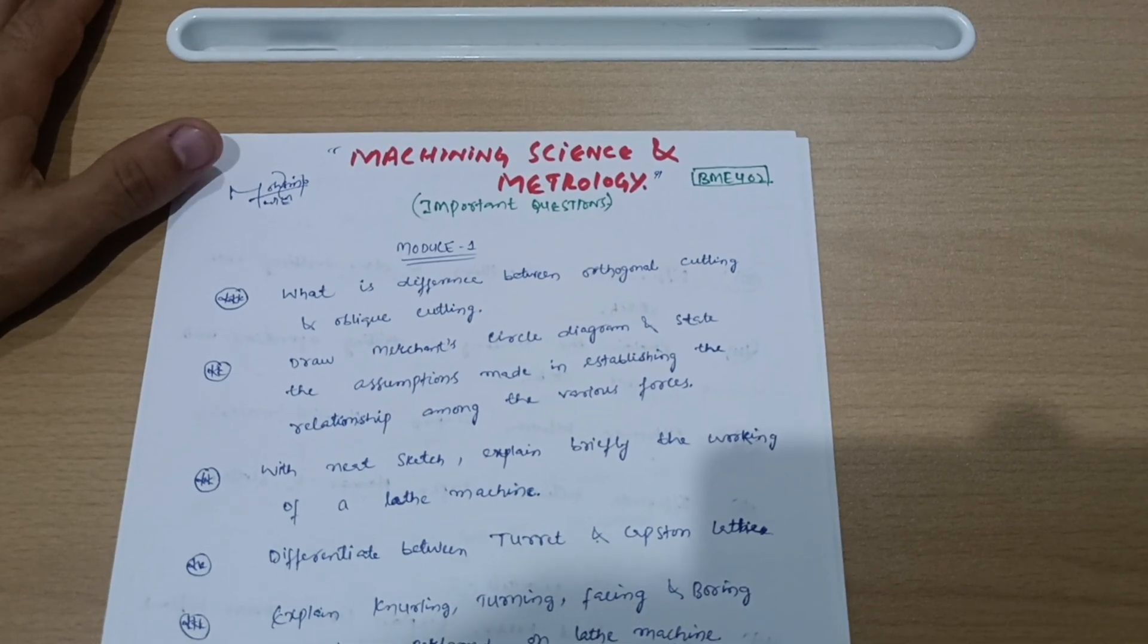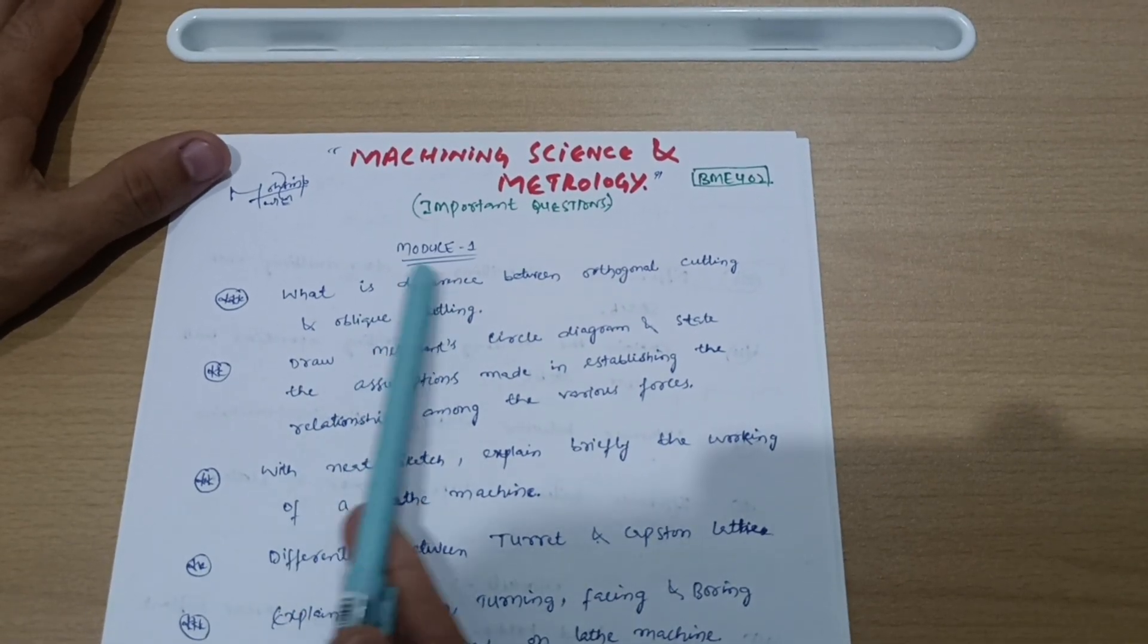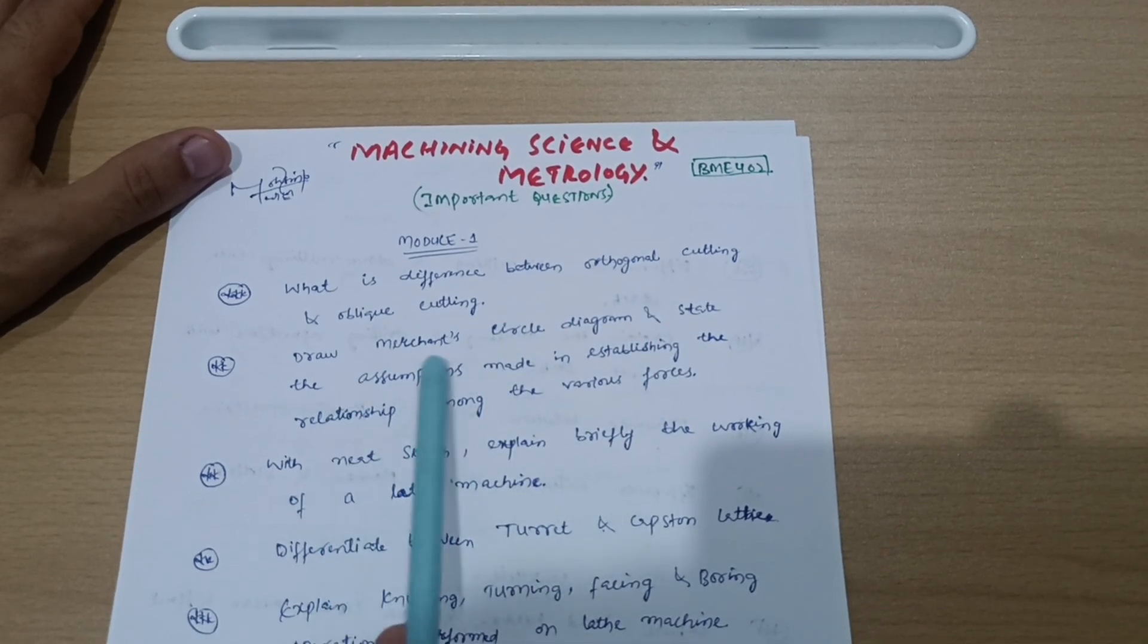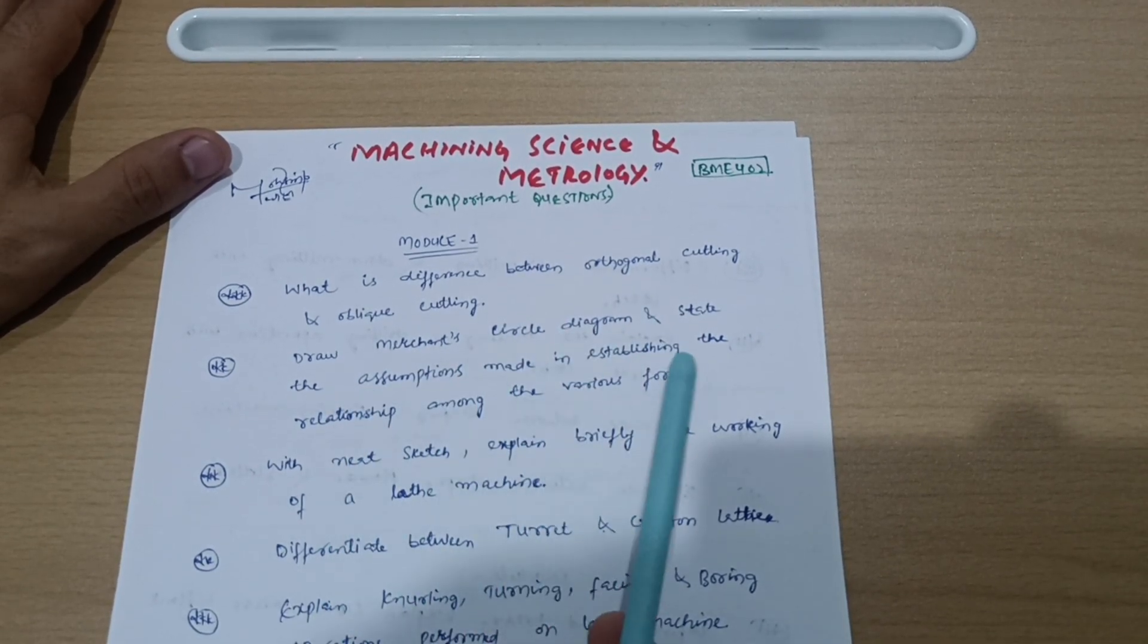Module 1: What is the difference between orthogonal cutting and oblique cutting? Draw Merchant circle diagram and state the assumptions made in establishing the relationship among the various forces. This may be the 10 marks question. With neat sketch, explain briefly the working of a lathe machine.